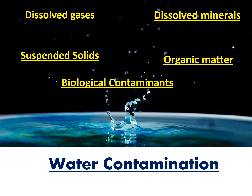The water around us is not pure enough to be usable for any purpose — not even for drinking. Why? Because water is contaminated by different things from start to end. When rain falls from the sky to the Earth's surface, atmospheric toxic gases like CO2, H2S, and SO2 — produced because of industrialization and urban development — dissolve into the water, creating contamination.